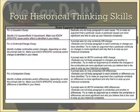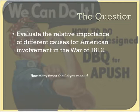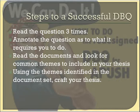Let's look at a sample question: 'Evaluate the relative importance of different causes for American involvement in the War of 1812.' You should identify this as a causation essay because it explicitly uses the word 'causes.' Read this question three times, then brainstorm. Possible causes include impressment, Britain not leaving Western lands, and Britain fueling hostile sentiment between Native Americans and American settlers west of the Appalachian Mountains. Don't write your thesis until you've read the documents, because they might point you in a direction.